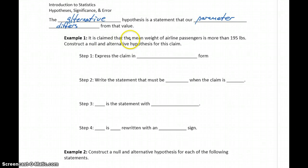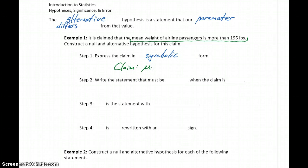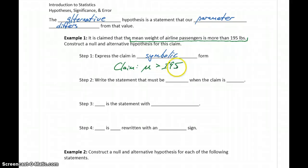The claim is that the mean weight is more than 195 pounds. The first thing we want to do is take that claim and express it in symbolic form. So in this case, our claim is that mu, the population mean, is greater than 195. We take that English expression and translate it into symbolic form.